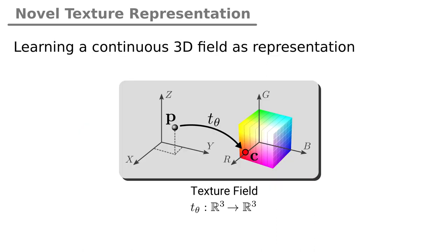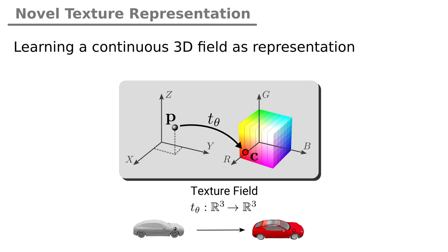Inspired by recently published continuous representations of 3D shapes, our novel texture representation is based on regressing color values in the 3D space. We represent texture by learning a continuous field parametrized with a neural network. This network maps any 3D location to a color value in the RGB space. By evaluating the texture field at any location on a shape, we can extract texture on the shape or for image pixels using corresponding depth and camera information.